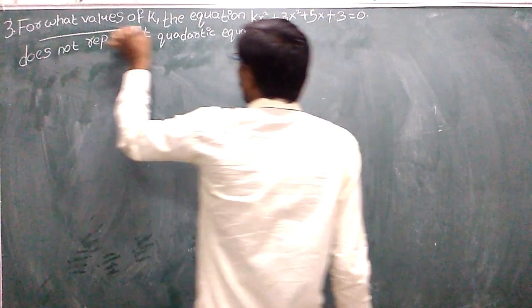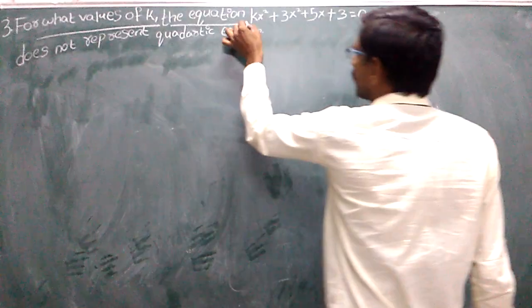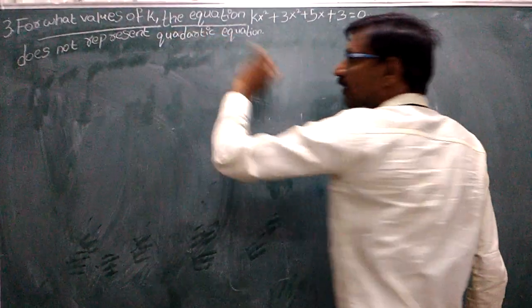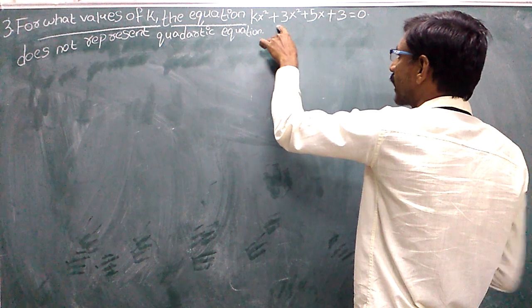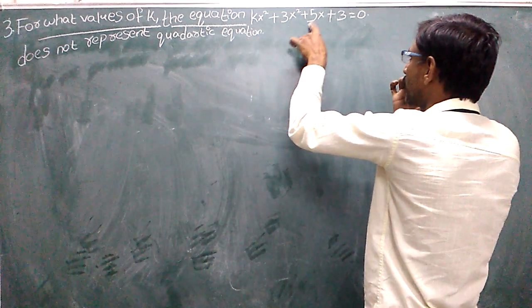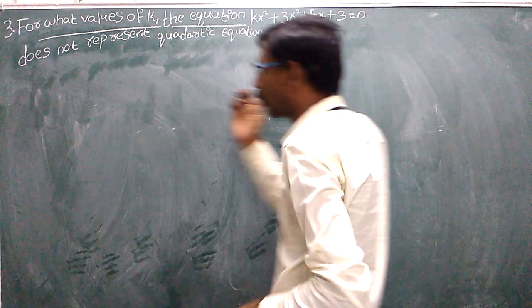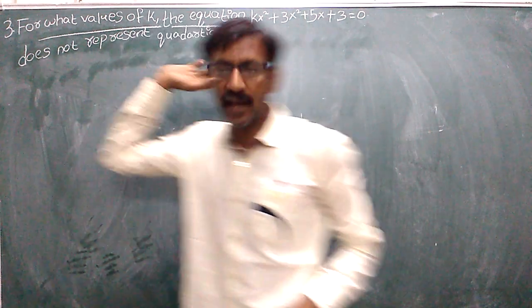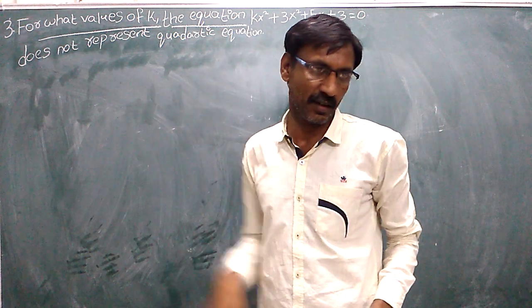For what value of k is the quadratic equation kx squared plus 3x squared plus 5x plus 3 equal to 0 does not represent a quadratic equation?